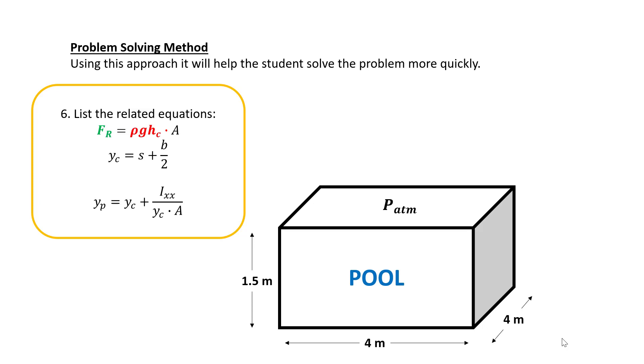Next, we will list the related equations which are hydrostatic force FR equal to ρghc times A, the distance to Pc, Yc equal to S plus B over 2, and the distance to FR, Yp equal to Yc plus second moment over Yc times A.